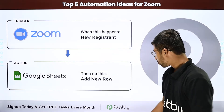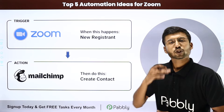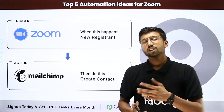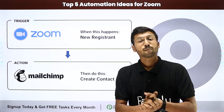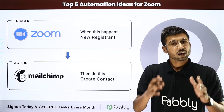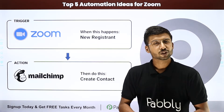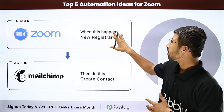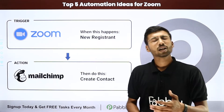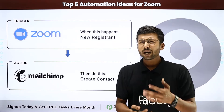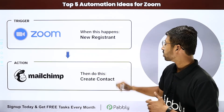Our next automation is Zoom to MailChimp. You must be using some kind of email marketing or CRM application like MailChimp. Using this automation, whenever a new user registers for your Zoom meeting or webinar, the same user will automatically be added as a new contact in MailChimp.